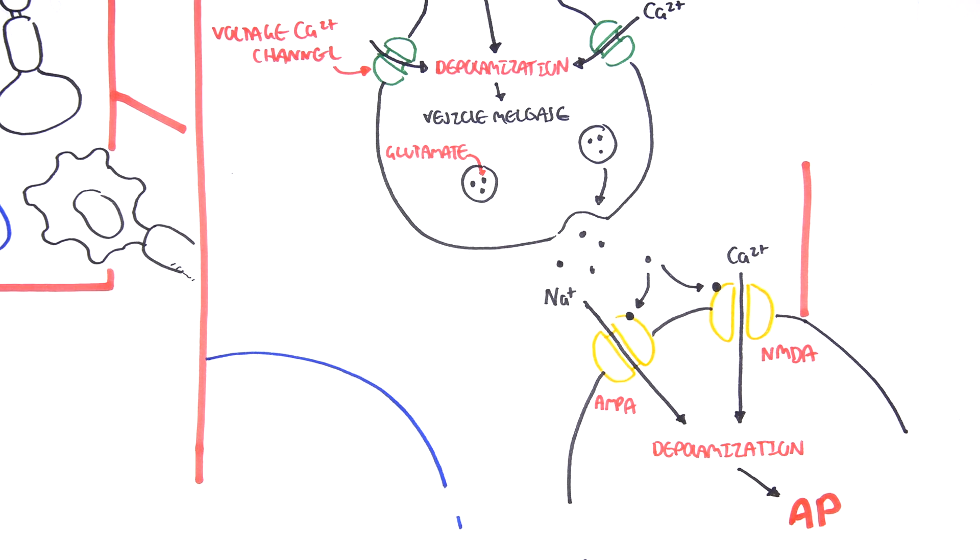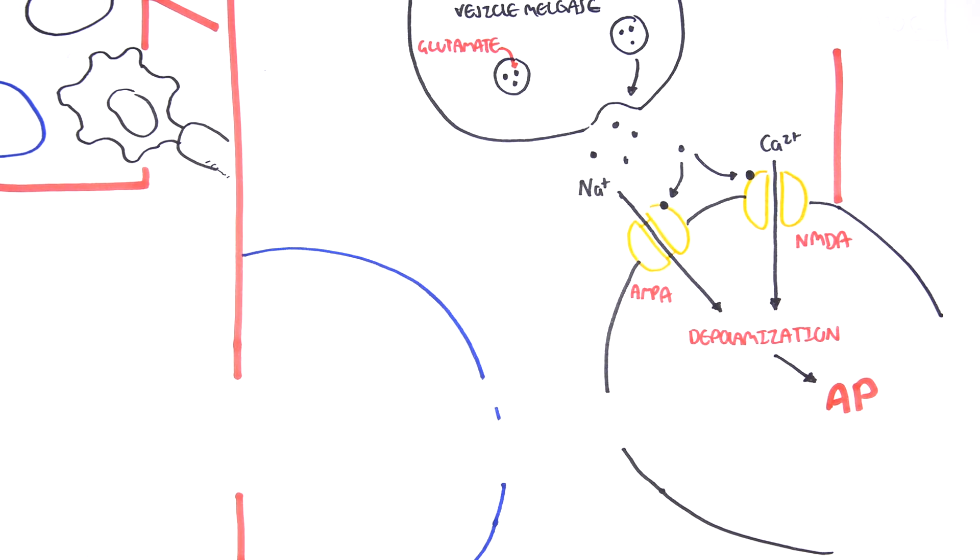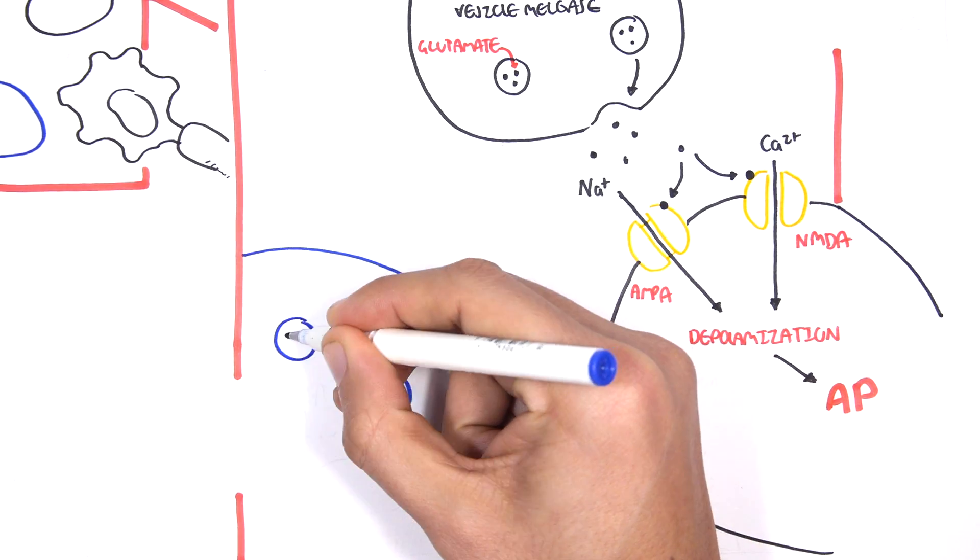If this happens a lot or consecutively, this will result in what's known as a seizure. I hope that part of the story made sense and how that's exciting - the neurons are exciting each other.